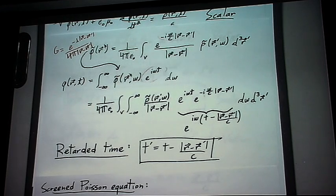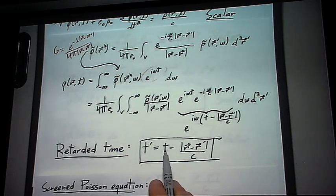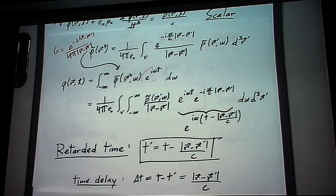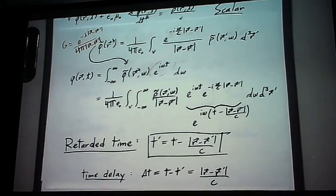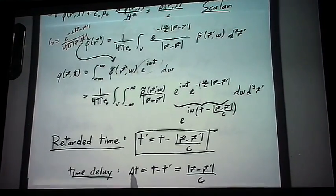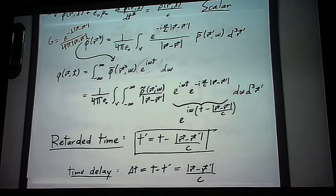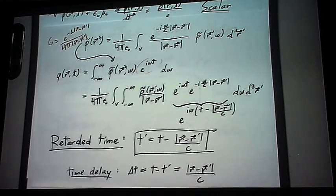It's the time at which the signal was sent, and t here is the time at which it was received, so we can say that there is a time delay due to the time it takes for the signal to travel at the speed of light, and that time delay is the delta t. It's t minus t prime, which is r minus r prime over c.